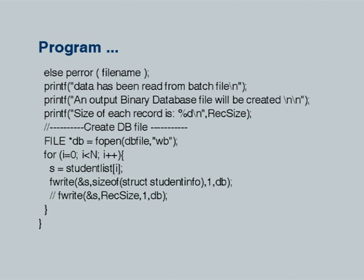The else clause handles the case where the input file could not be opened — we print an error with the file name using perror. Otherwise, we print that data has been read from the batch file, that an output binary database file will be created, and display the size of each record which equals rec_size. To create the database file, it is very simple: open it with 'FILE *db = fopen(db_file, "wb")'.